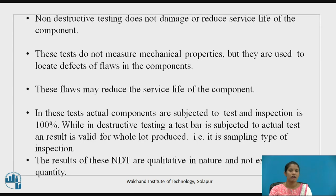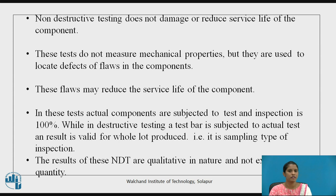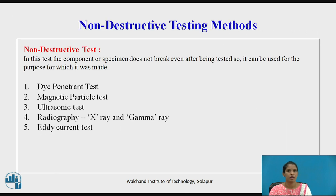In NDT, the actual components are subjected to test and the inspection is 100%. In destructive testing, a test bar is subjected to the actual test and the result is valid for the whole lot produced — that is, it is a sampling type of inspection. The results of NDT are qualitative in nature and do not affect the component.